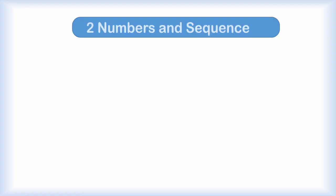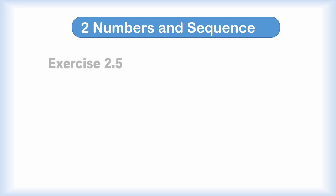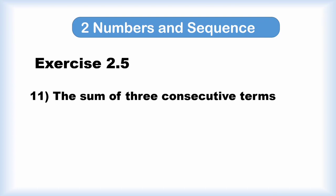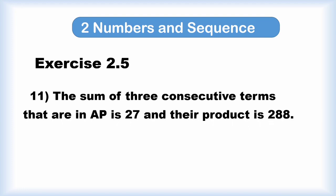Class 10, Second Chapter: Numbers and Sequence, Exercise 2.5, Problem number 11. The sum of three consecutive terms that are in AP is 27 and their product is 288. Find the three terms.